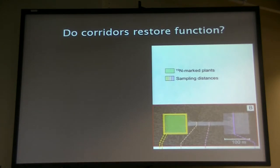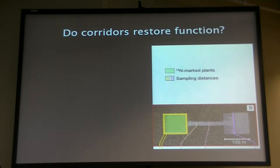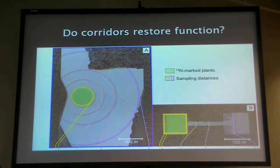This also causes us to rethink what our standard for corridor effects should be. We've always compared the movement between connected fragments and unconnected fragments. But what we've never known is how much do corridors get us to the standard of dispersal in unfragmented landscapes. So we created an experimental context where we compare movement — the green area is sprayed with heavy isotopes of nitrogen and we have seed traps going down the corridor and into the connected fragment — and then compare that to dispersal in large, relatively unfragmented landscapes.